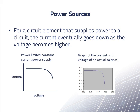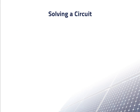For elements that supply power to a circuit, the current eventually goes down as the voltage becomes higher. The reason is that there is only so much power the element can supply to the circuit. It is limited in part by how much power the element can get from wherever it is getting power.